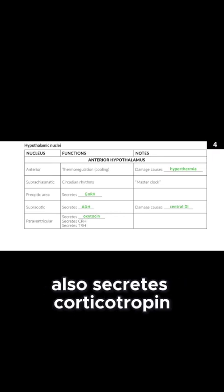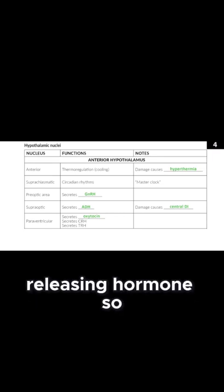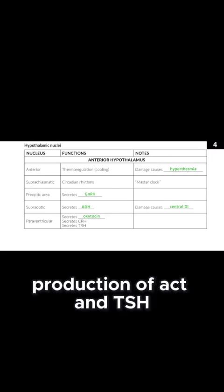The paraventricular nucleus also secretes corticotropin releasing hormone and thyrotropin releasing hormone, so it's regulating the anterior pituitary's production of ACTH and TSH.